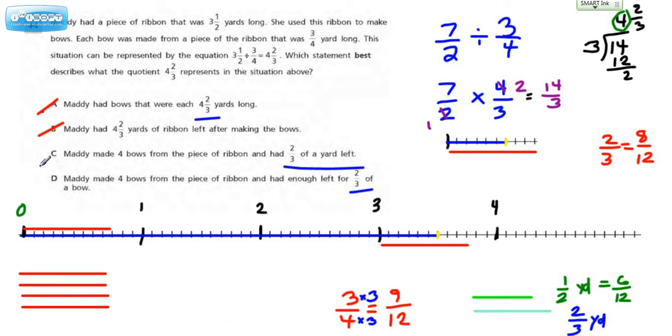Now we're left with the two that are very similar and very hard to determine which is the better answer. Maddie made 4 bows from the piece of ribbon and had ⅔ of a yard left, versus choice D: Maddie made 4 bows from the ribbon and had enough left for ⅔ of a bow.